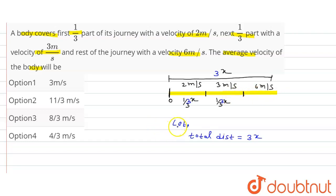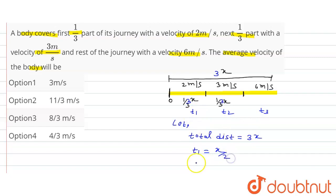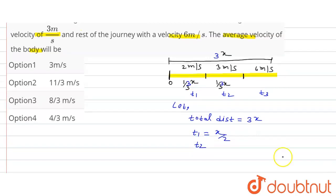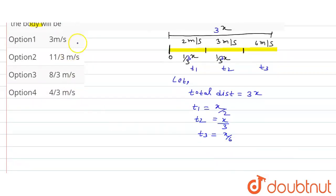The time taken in each individual part: t1 = x/2, t2 = x/3, and t3 = x/6.